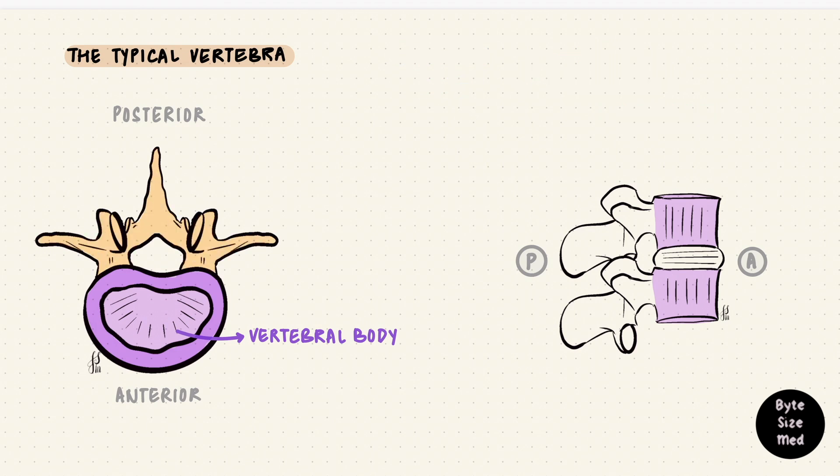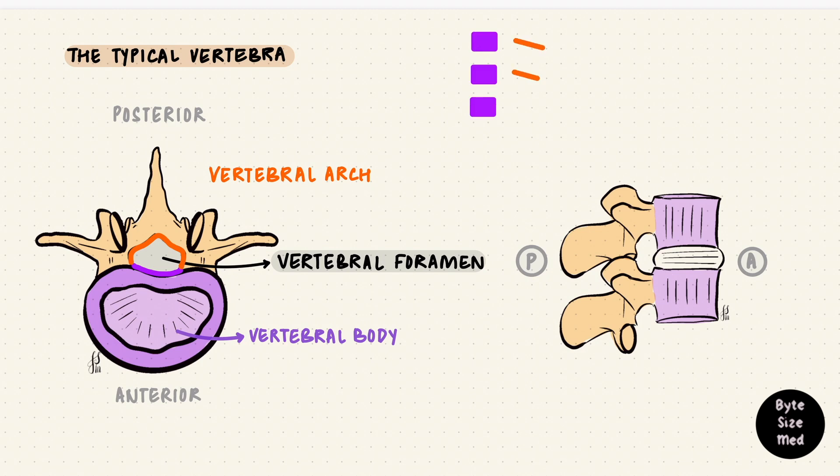Now posteriorly is the vertebral arch, which literally looks like an arch. This arch has got processes, and these processes form attachment sites for muscles and ligaments. But the vertebral body and the vertebral arch form the boundaries of a space called the vertebral foramen. The vertebral body forms the anterior margin of this foramen, and the vertebral arch forms the posterior and the lateral margins. When the vertebrae stack up, these spaces line up, forming a canal. That's the vertebral canal. What does the vertebral column protect? The spinal cord. That's what's in this space. The vertebral canal and so the vertebral foramen contains the spinal cord.